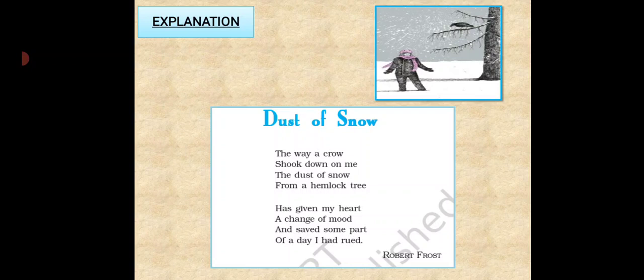And then we have alliteration. If you see that in second stanza, first line, has given my heart. So H, H, repetition, has in heart. And saved some part, third line, second stanza, S, S. Again a repetition of S. So it is alliteration.